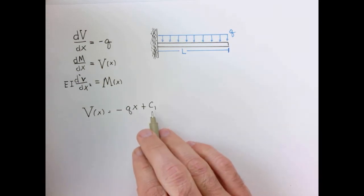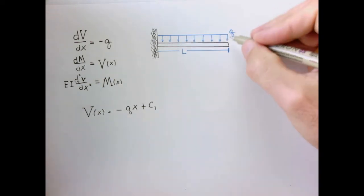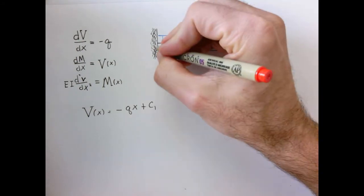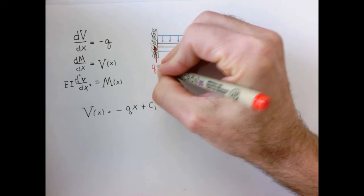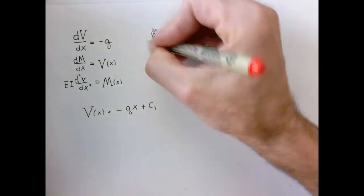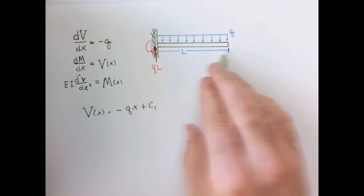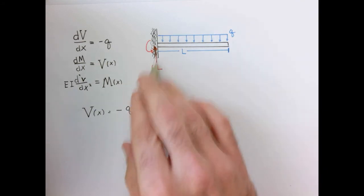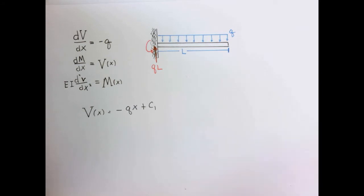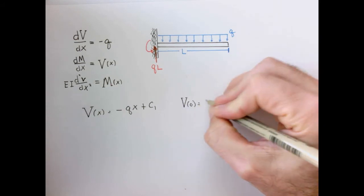To find this constant of integration, we consider the free body diagram for the entire beam. We have a load Q distributed along the length, meaning there's a vertical reaction at our x equals zero location of magnitude QL acting upwards. In addition, we need a reaction moment at the wall. So we know the shear at x equals zero is going to equal the value of the reaction support, which means V(0) equals QL.